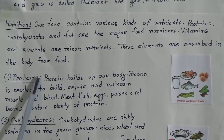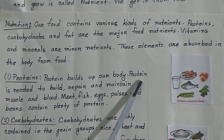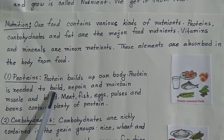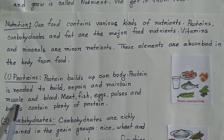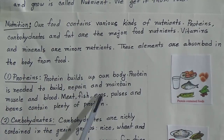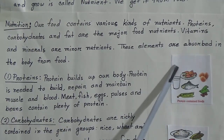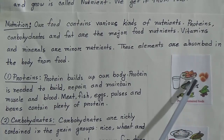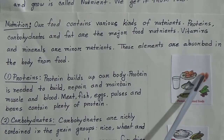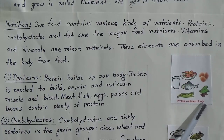What is protein? Protein builds up our body. Protein is needed to build, repair, and maintain muscle and blood. Meat, fish, eggs, pulses, and beans contain plenty of protein. You can see in the picture here — fish, meat, egg, and beans — these are all protein-containing foods.